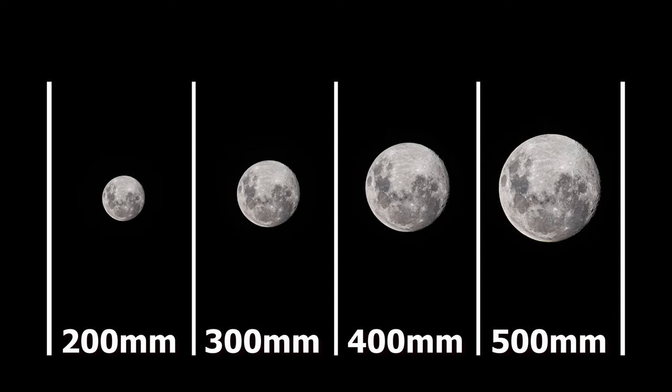For gear, just about any digital SLR or mirrorless camera will allow you to photograph a lunar eclipse — it really depends on the lens. The minimum focal length for a lens is really about 200 millimeters, and the longer the focal length, the more detail you're going to get. This shows the different focal lengths — 200mm, 300mm, 400mm, and 500mm — and gives you an idea of how big the moon looks when you take a photo.